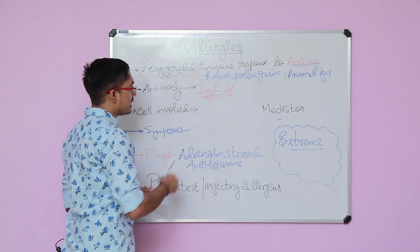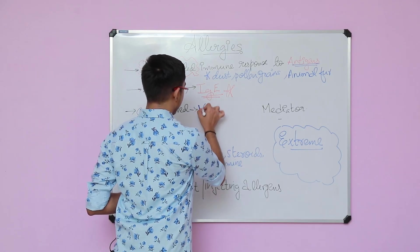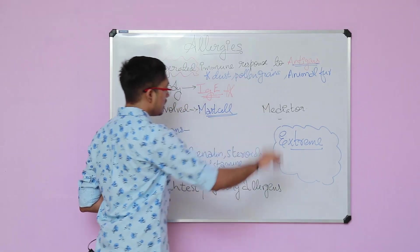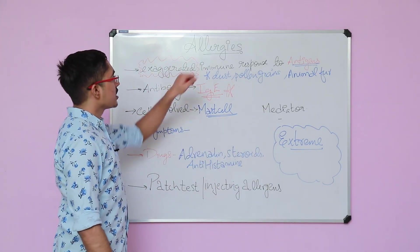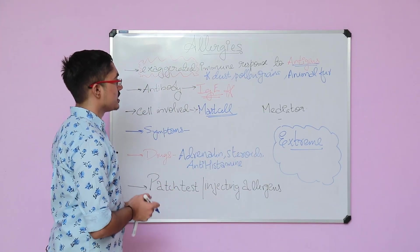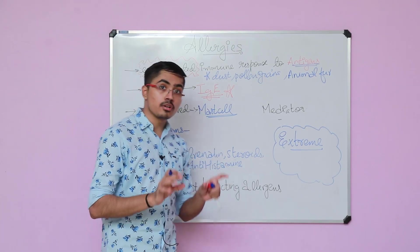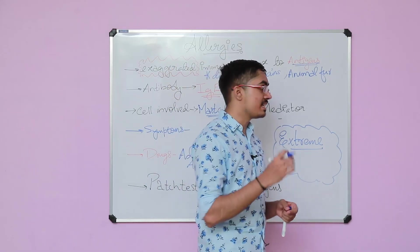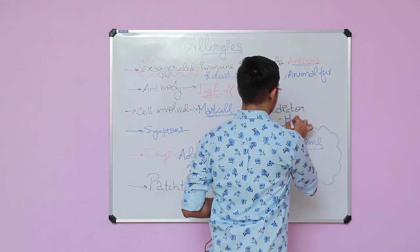The cell involved in allergic response is mast cell. Mast cell is the cell which is involved in contributing to the development of allergy. This mast cell will secrete histamine and serotonin. Let's talk about histamine.